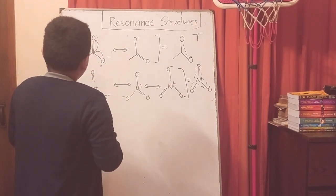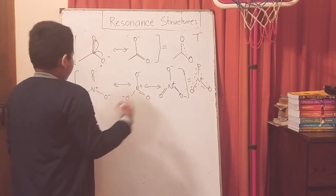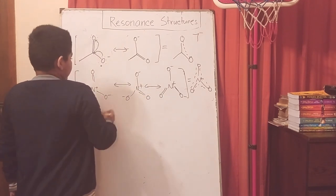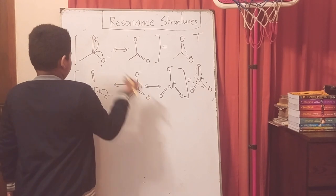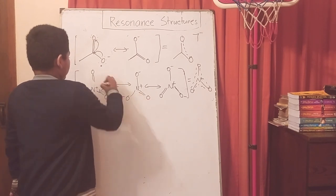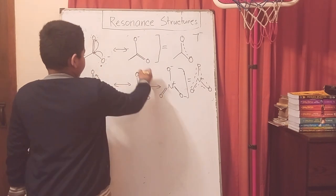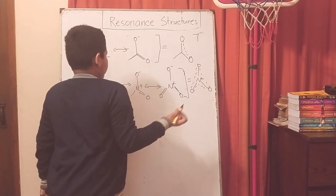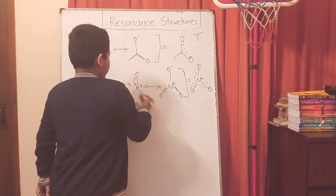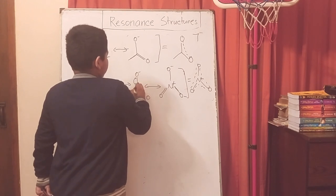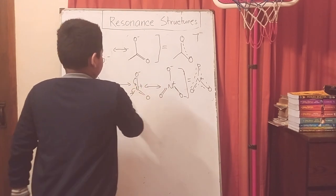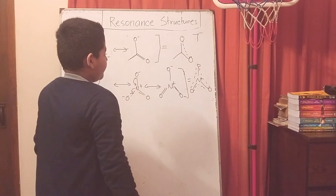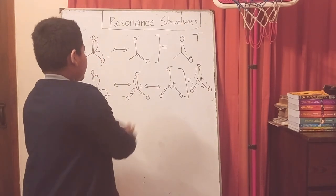Let's look at another thing such as this nitrate ion. If I were to give one of the electrons, this will have to lose one, so we're kind of switching the charge here. If this were to lose an electron and give it to the nitrogen, nitrogen will have to lose an electron giving it to this oxygen, which means we'll get this.